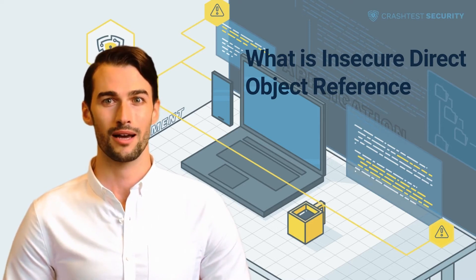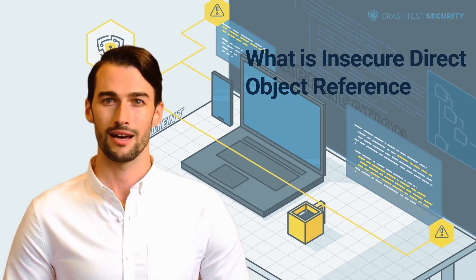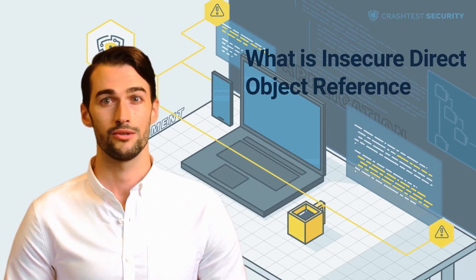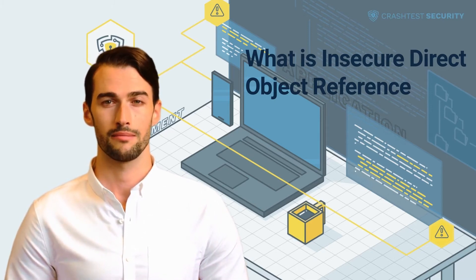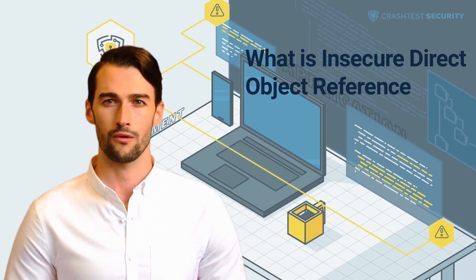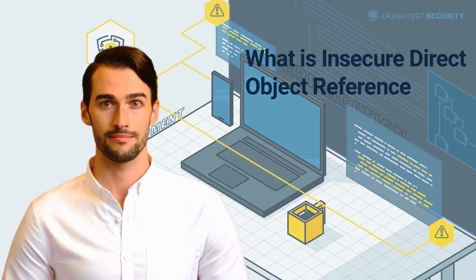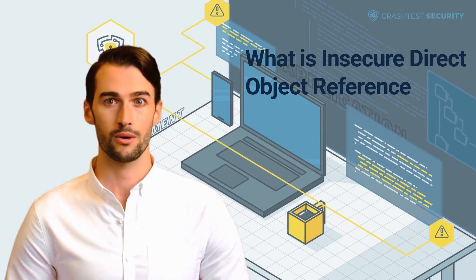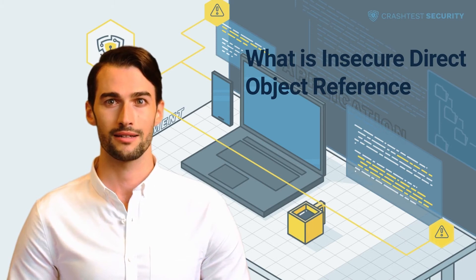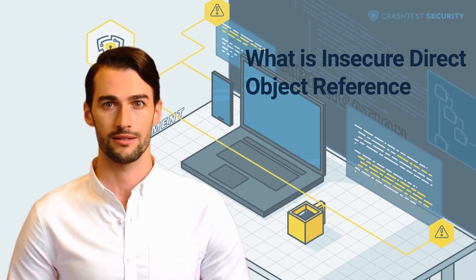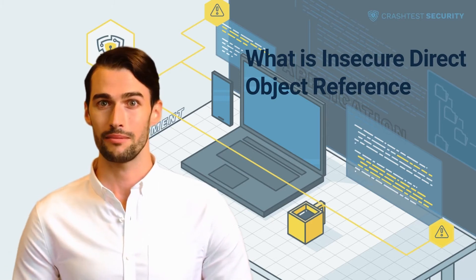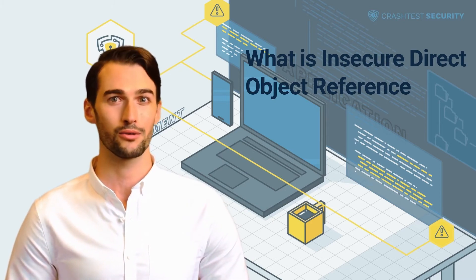Object manipulation: with access to internal references, attackers gain direct access to the data and state of the application. Attackers can then manipulate the exposed objects to modify data, access hidden functions, or further escalate privileges. Direct file access: malicious users can combine IDOR attacks with directory-traversal attack techniques to manipulate the host's file system, granting them the ability to upload and download files freely and manipulate content accessed by other users.